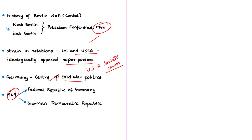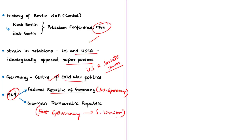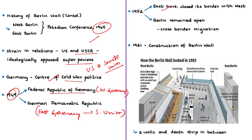In 1949, Germany under occupation by the four powers became two independent nations: the Federal Republic of Germany (West Germany), allied to the Western powers, and the German Democratic Republic (East Germany), allied to the Soviet Union. In 1952, the East German government closed the border with West Germany. West Germany, which adopted democratic values and capitalism, became more prosperous compared to East Germany.